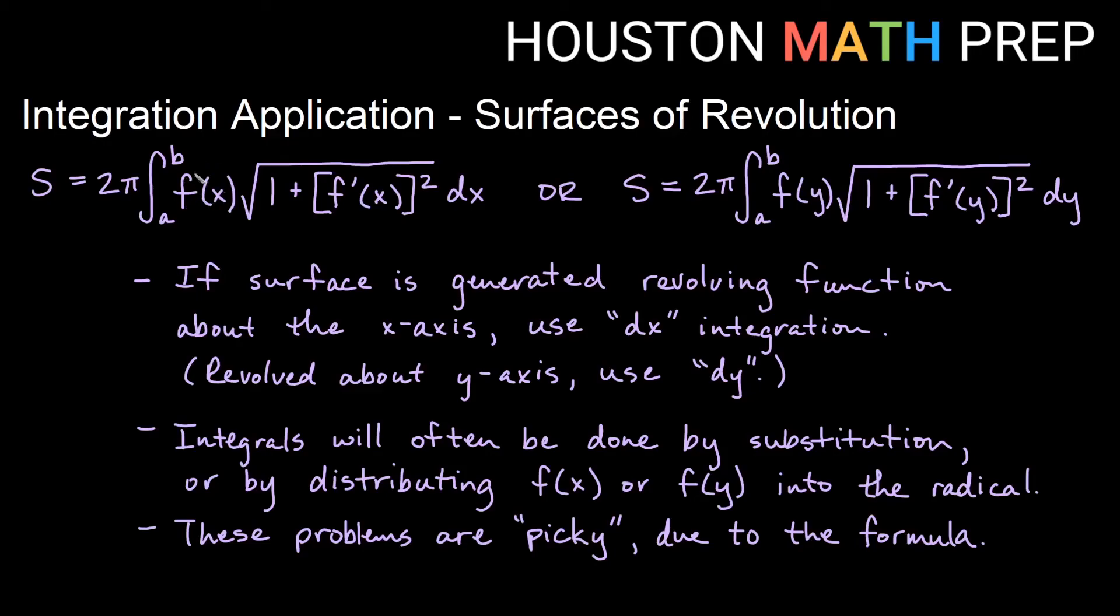You'll notice that you have a function outside and then you also have a derivative of a function squared inside. So getting something that is easily integrable by hand will usually involve some sort of u-substitution for your integral or possibly distributing the function into the radical and then integrating that way. Because of the messiness of this formula with a function times a root and a root has a bunch of stuff in it that involves derivatives of functions, these problems are pretty picky. So you will notice very specific types of simple functions or very particular looking functions that will work to be integrable by hand with these.